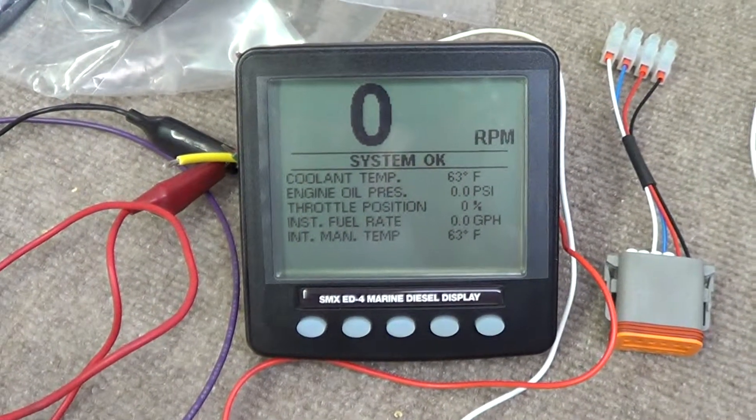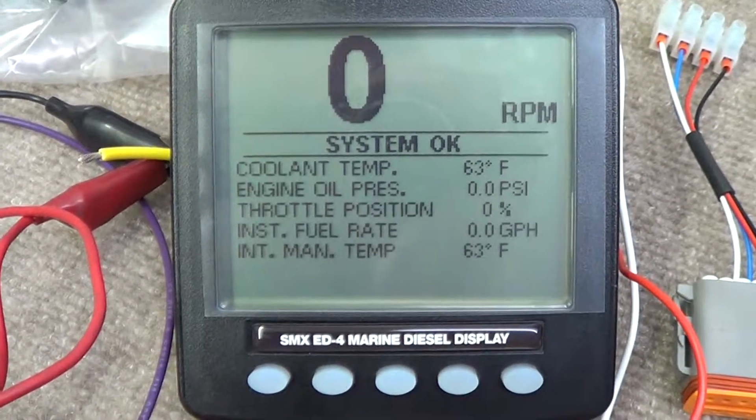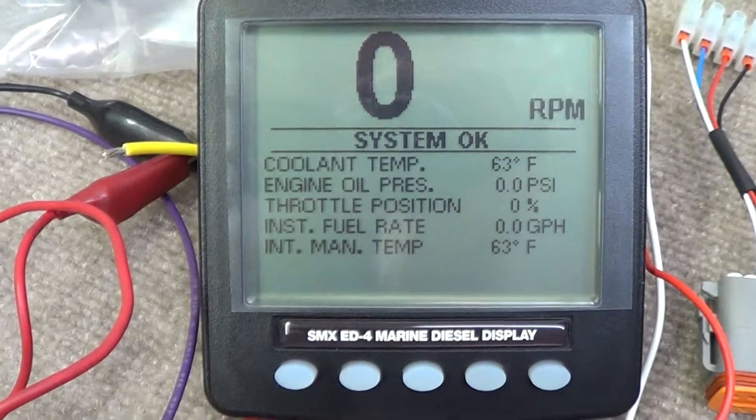So the system came up fine. We show zero RPM, so system okay. All of our ambient temperatures and everything are being displayed on the display.